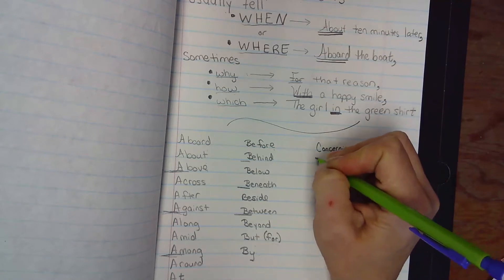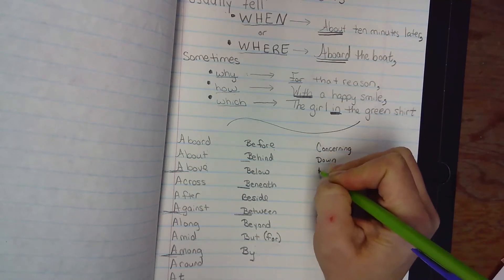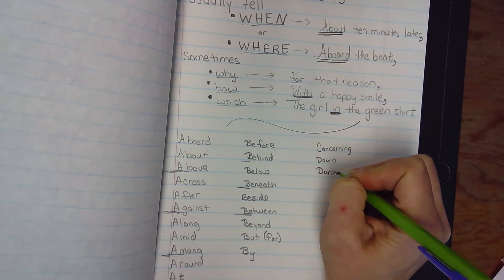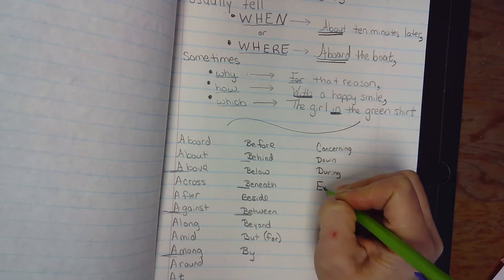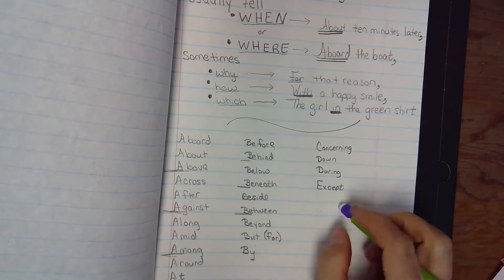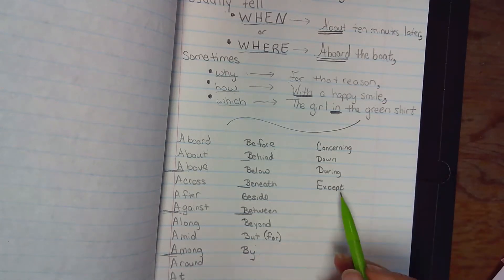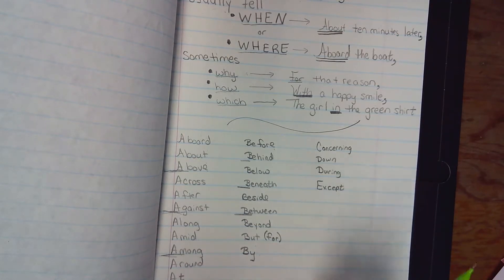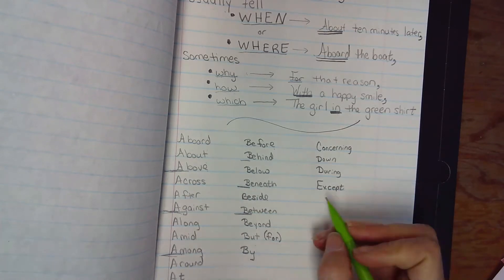Concerning, down, during, except. So except means this is true for everything, but we need to leave this out—this doesn't fit. I like everything chocolate except chocolate-covered crickets. Yeah, that would be a good way to use except.